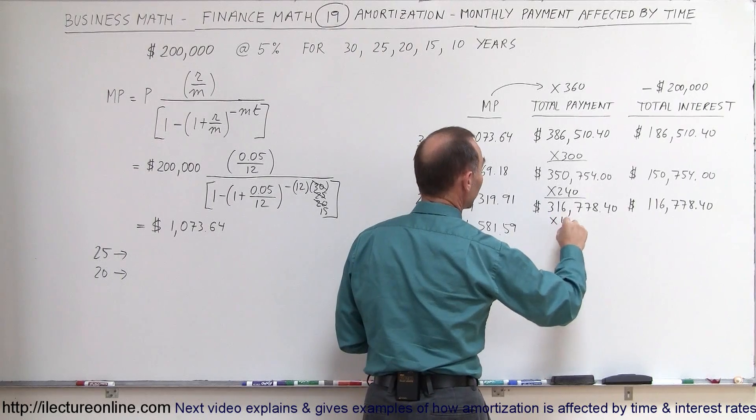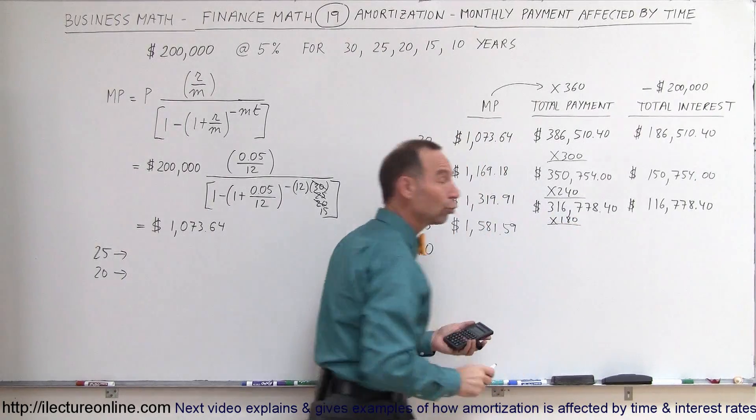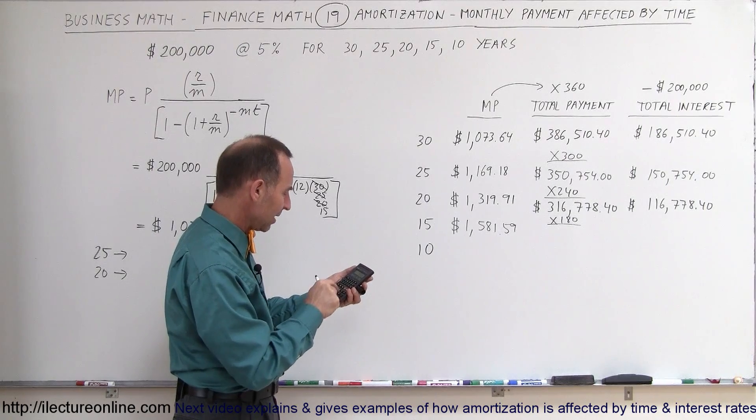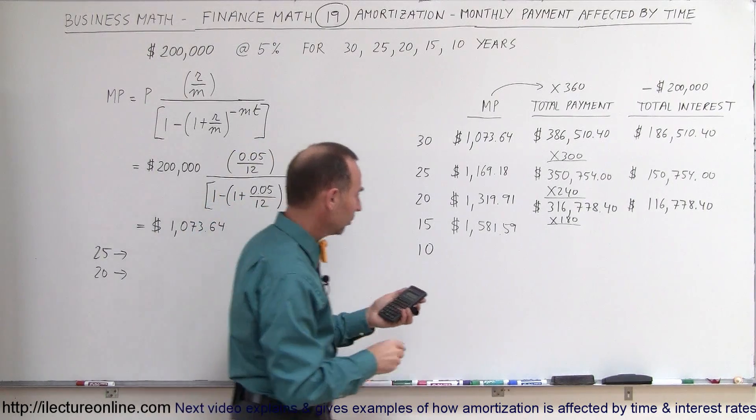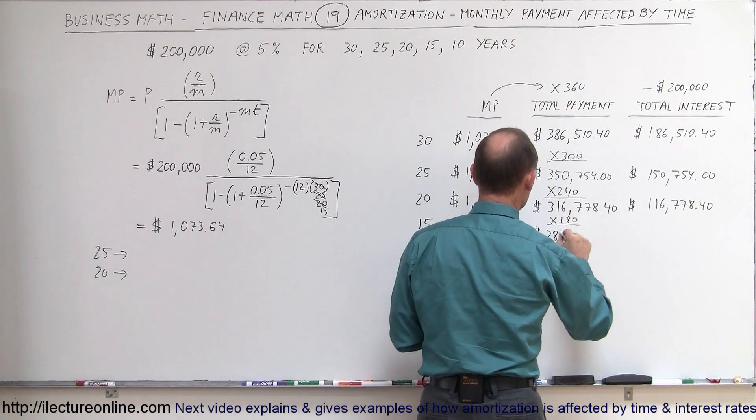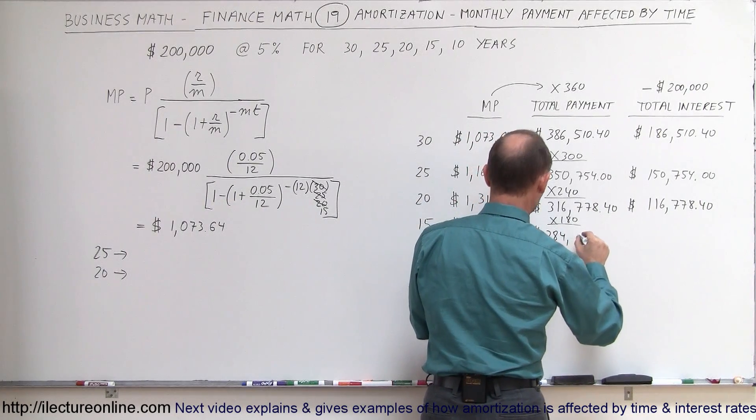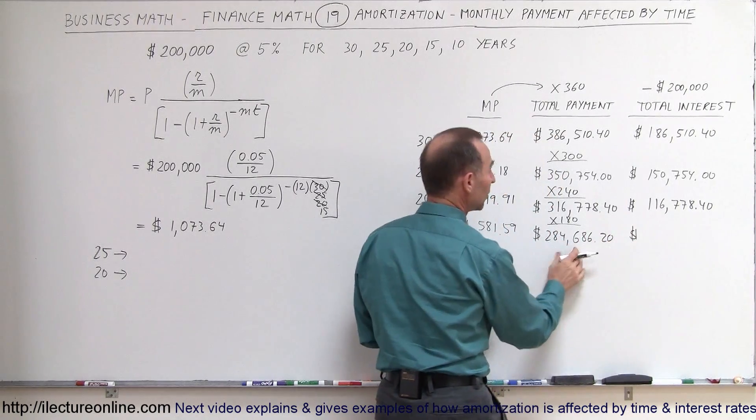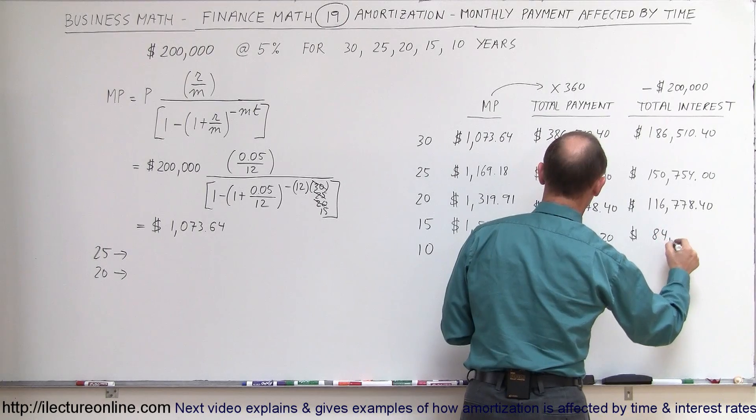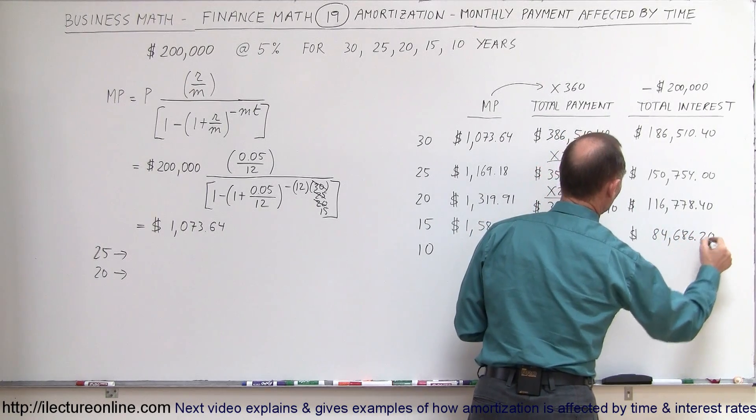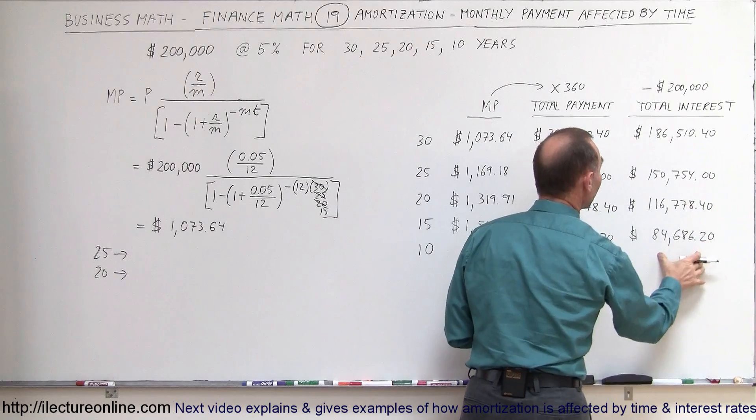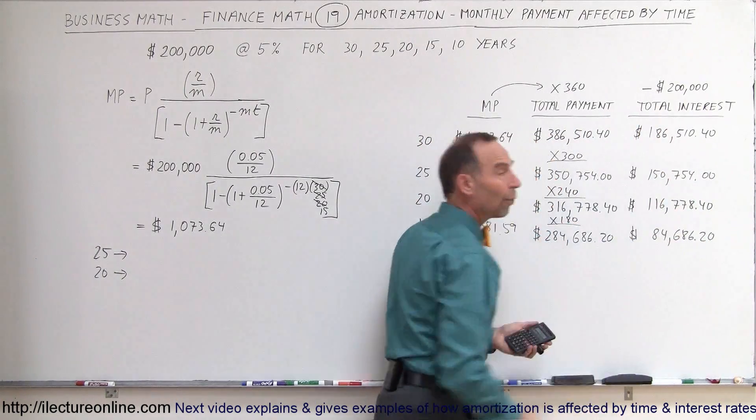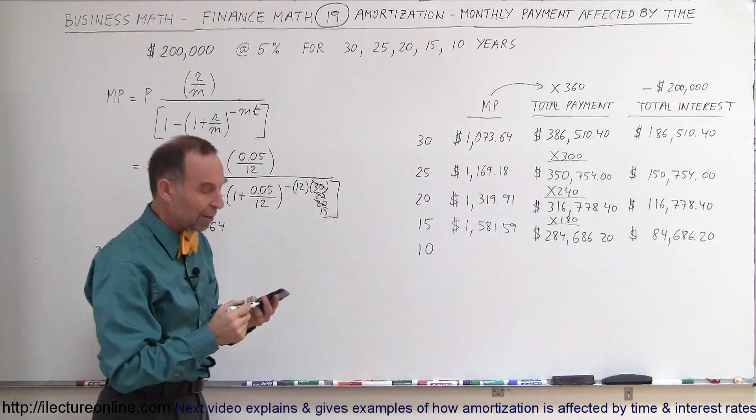So now we have to multiply that times 180 to see what your total payments will be. $1,581.59 times 180. Your total monthly payments are now $284,686.20, which means the total interest paid will now be $84,686.20. Look how much money you can save. By going for a 15-year loan instead of a 30-year loan, you could save over $100,000 in interest payments to the bank.